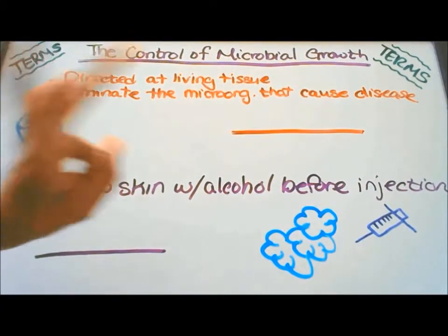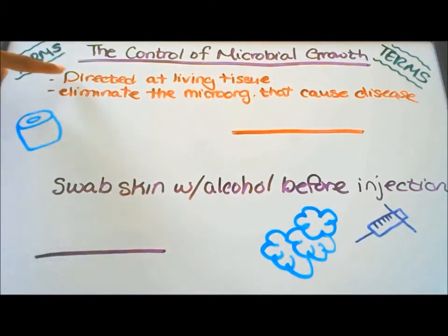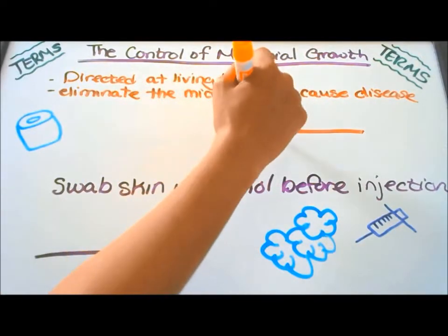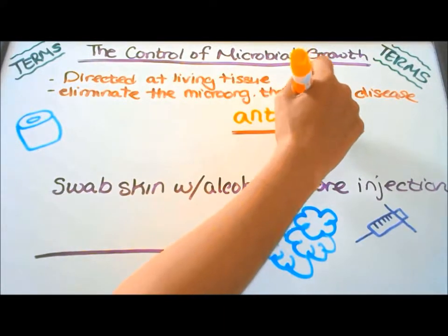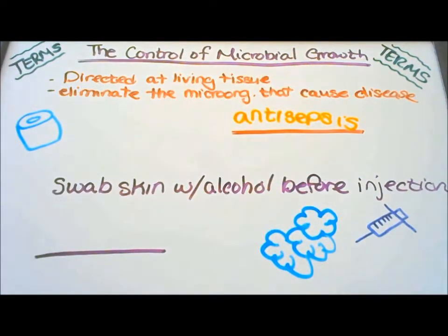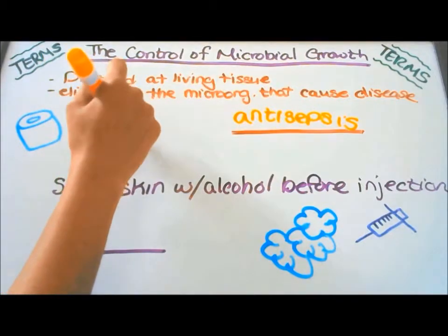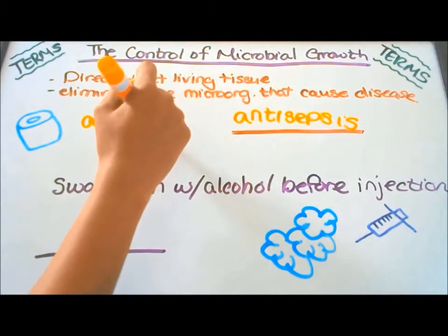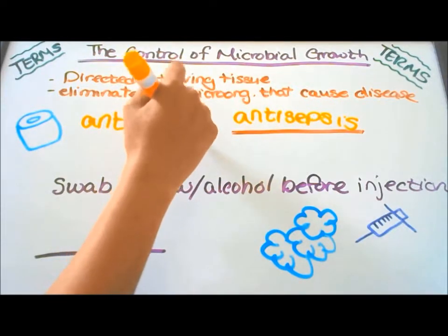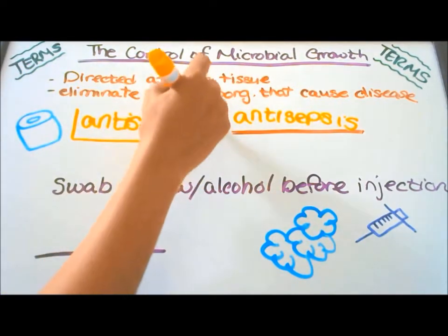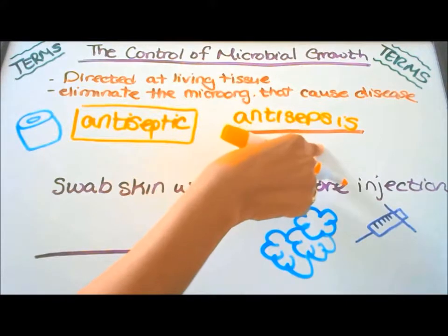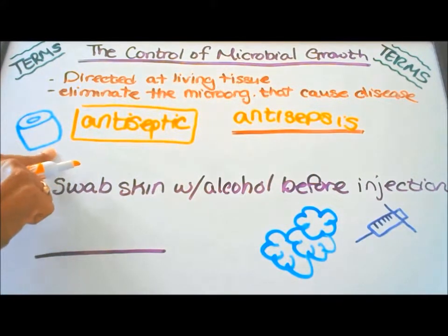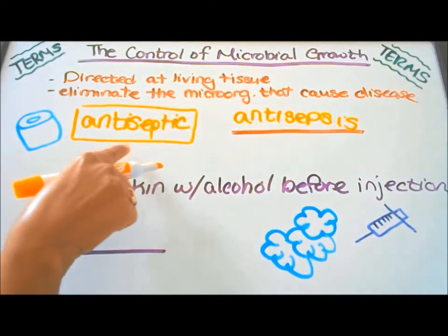On to our third definition: directed at living tissue. This is called antisepsis. The chemical that is put on the living tissue is called an antiseptic. I have a roll of tissue here to help you remember that antisepsis is directed at living tissue.